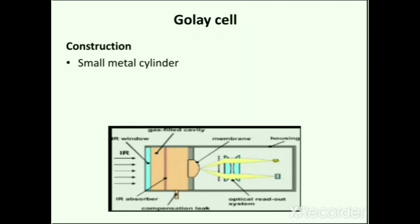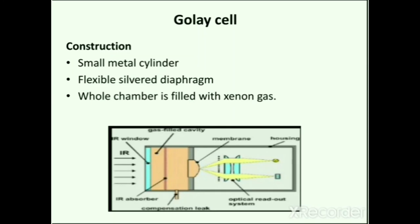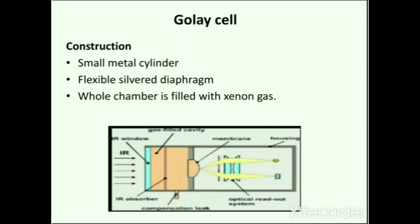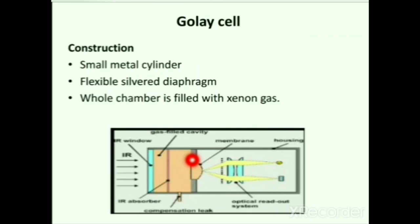Next is the Golay cell, mainly used for infrared spectroscopy. It consists of a xenon-filled enclosure with an infrared absorbing material and a flexible diaphragm or membrane. When infrared radiation is absorbed, it heats the xenon, causing it to expand; the resulting increase in pressure deforms the membrane. A light continuously reflecting off the membrane is detected by a photodiode, and motion of the membrane produces a change in signal. The detector detects this signal and a spectrum is produced by the recorder.